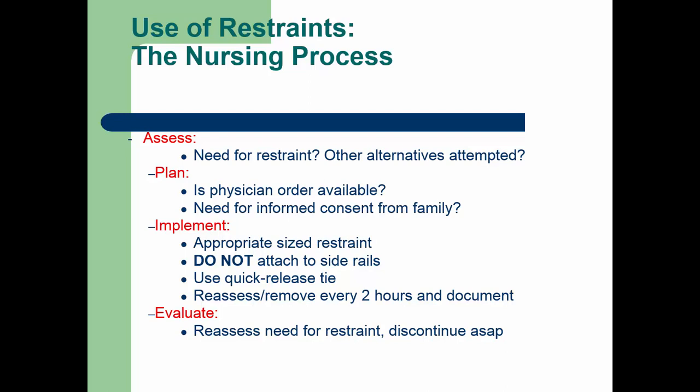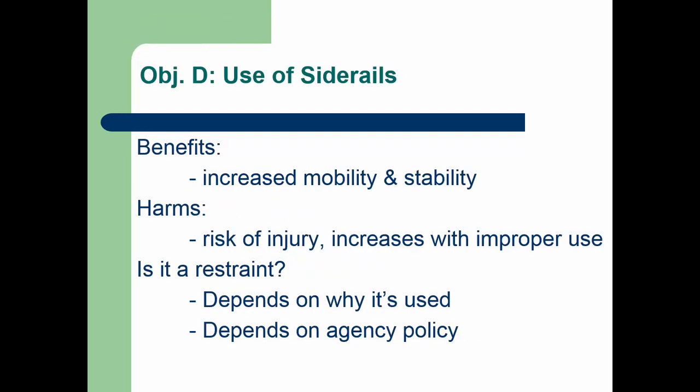This slide walks you through the nursing process when a patient needs to be in restraints — from the assessment phase through the evaluation phase. Regarding side rails: they're commonly used in healthcare organizations and if used properly can increase a patient's mobility and stability, but if used improperly they can cause injury. Side rails can be considered a restraint if used to prevent the patient from getting out of bed, but not typically if used to improve mobility or per patient request. Four side rails are seen as more restrictive, while two side rails are seen as less restrictive and more for repositioning.